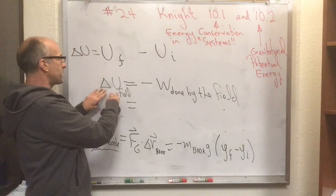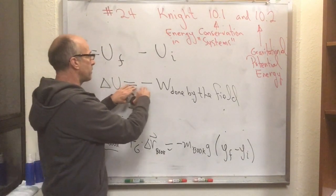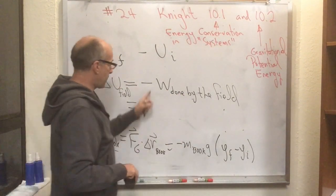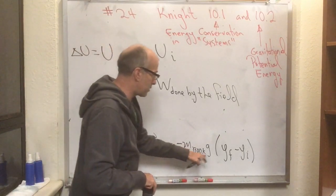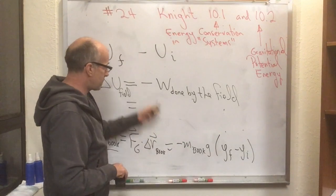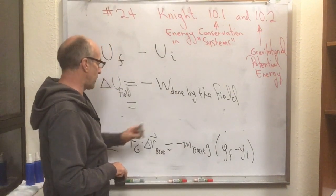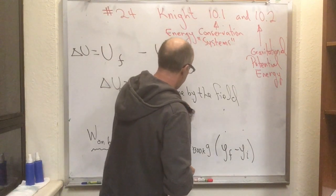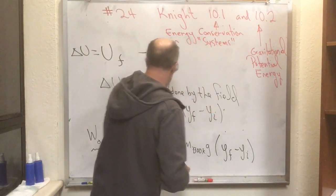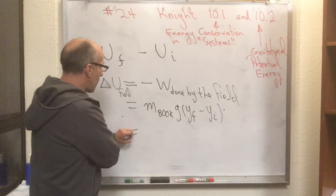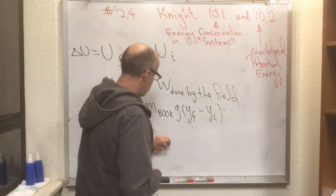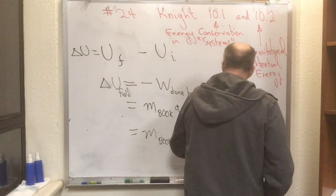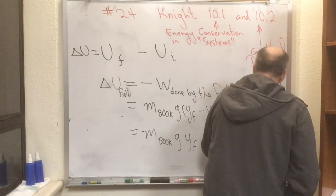To be a little more precise, the change in the potential of the field is equal to minus the work done by the field. Now let's plug in for our specific case here. We already had that the work done by the field was minus M book G, Y final minus Y initial. The minus signs cancel when I plug that into the work done by the field, and so now I have M book G, Y final minus Y initial, which I can rewrite as M book G, Y final minus M book G, Y initial.